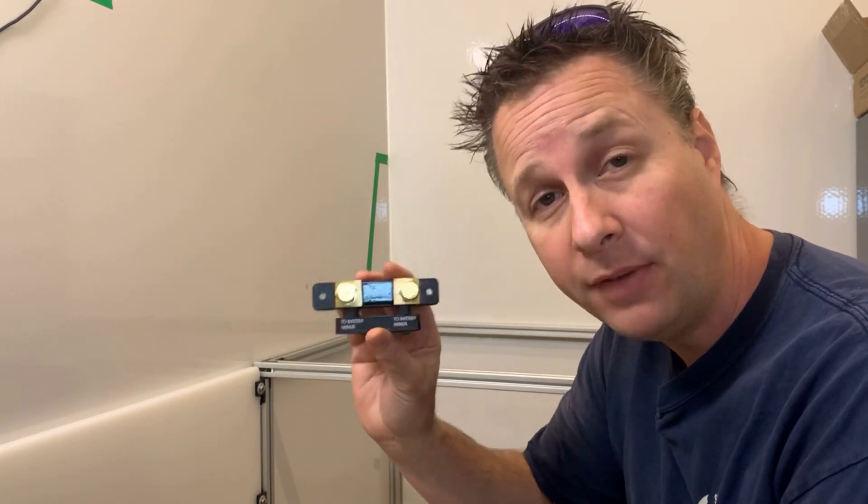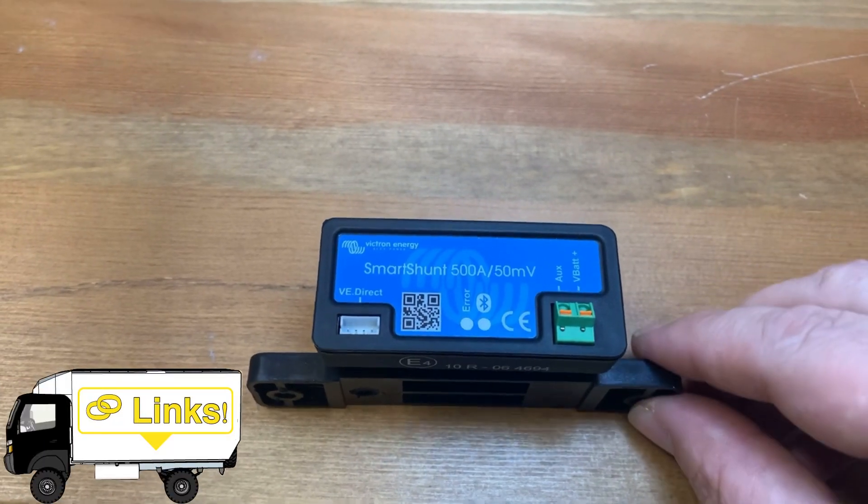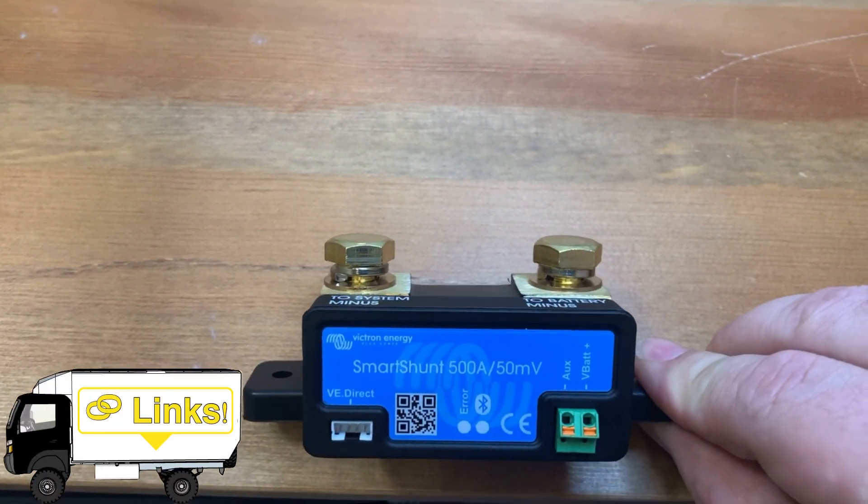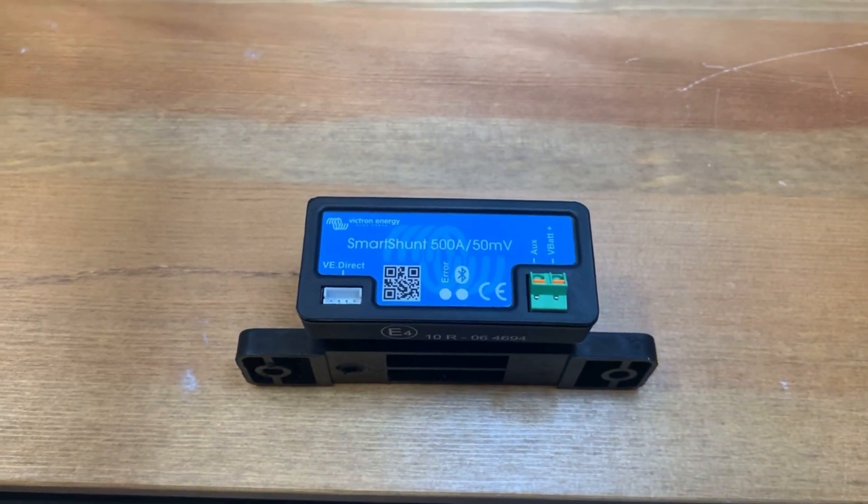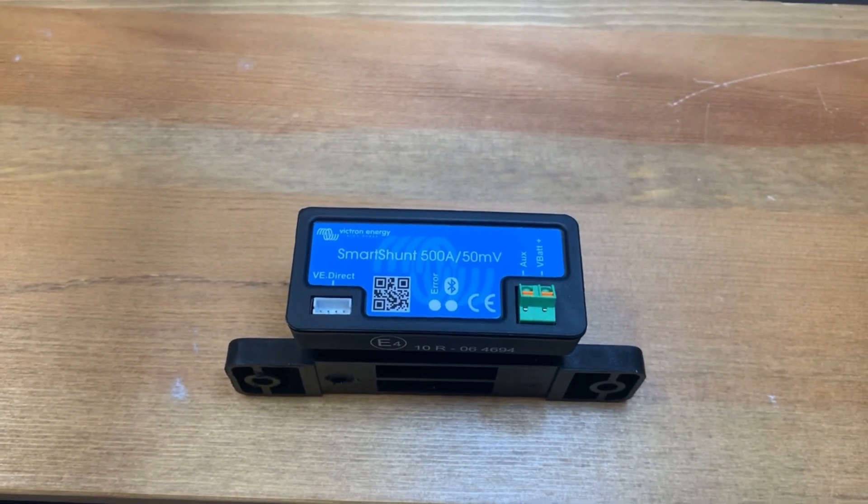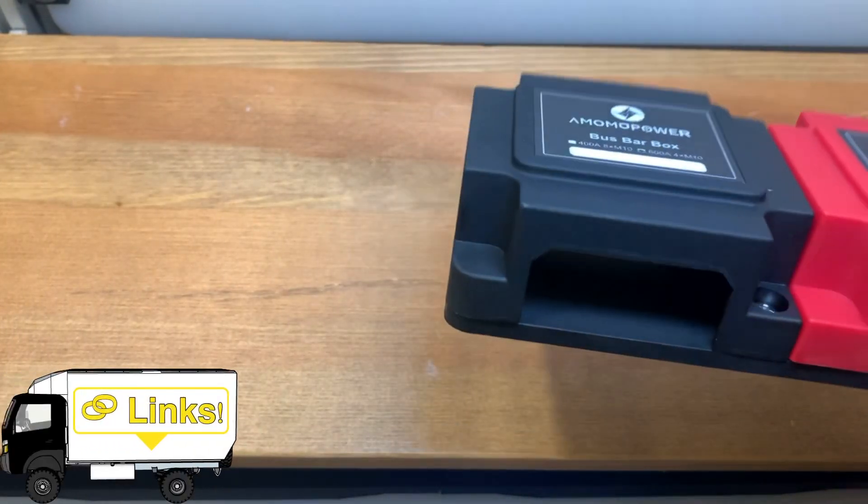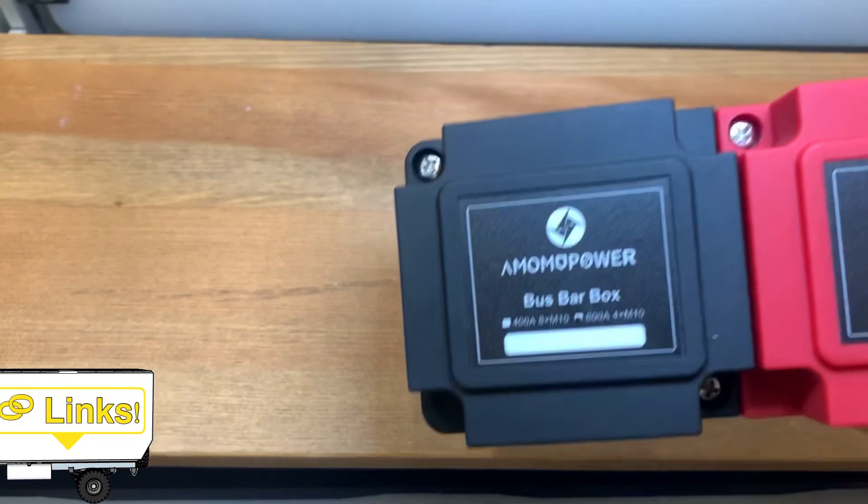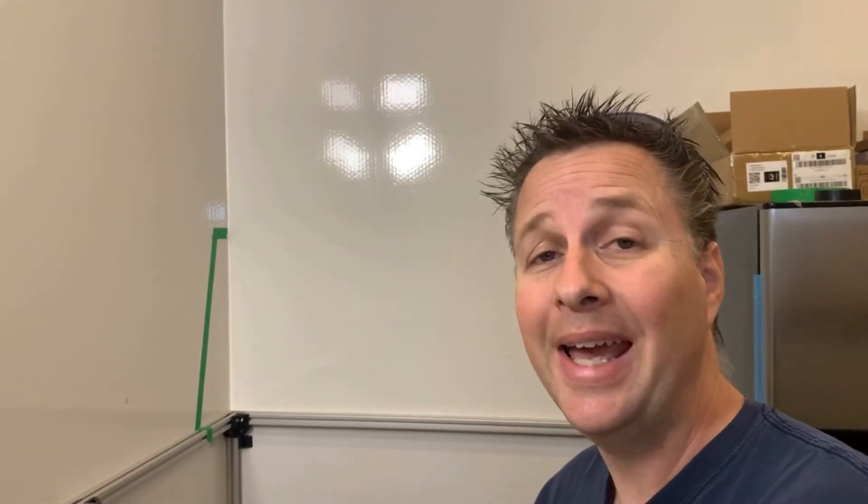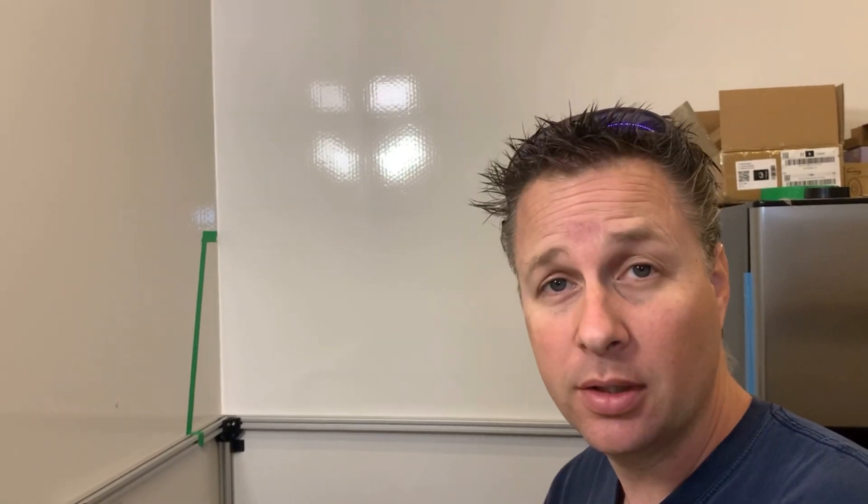All three will run to this 500 amp shunt. For those who are not familiar, a shunt is used to measure how much power is flowing through the system. This is a Victron smart shunt which means I'll be able to monitor this on my phone or an iPad or the Victron monitoring system. The output side of the shunt will then run to this 600 amp bus bar on the negative side. That bus bar will be the main connection point for any of the systems downstream.